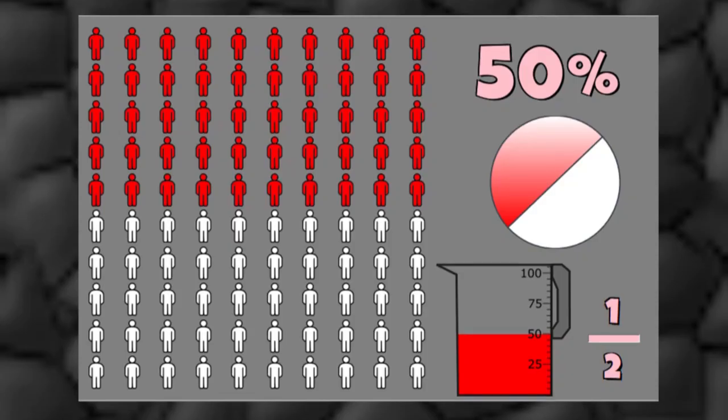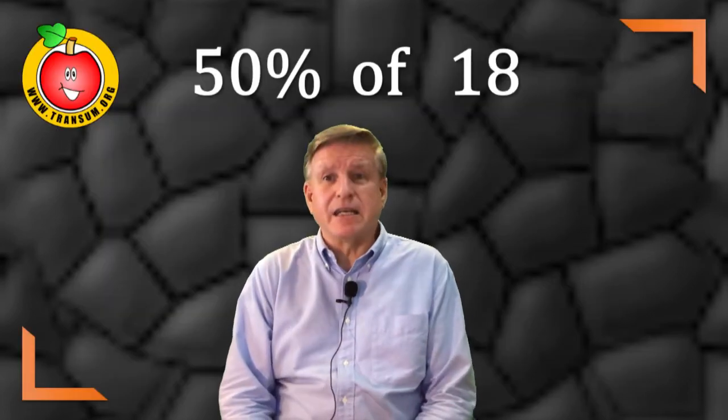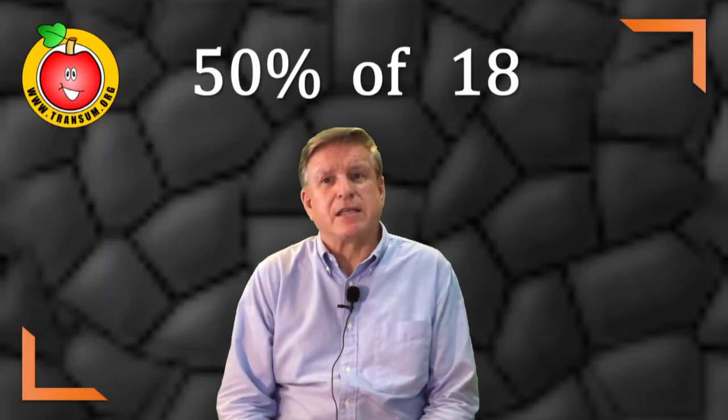I guess the easiest one is 50% because 50% means 50 out of a hundred. Percent means out of a hundred. So 50 out of a hundred is a half of something. So you can very quickly work out 50% of 18. That means half of 18. That's nine.